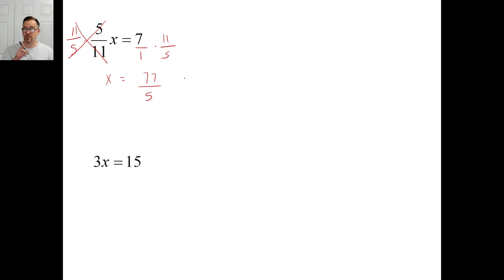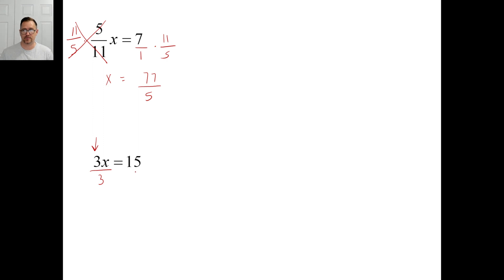Try problem B, but notice how it's different from A — the coefficient is 3, an integer, not a fraction. You could treat it as 3 over 1 and multiply by 1 over 3, or since it's an integer, it's probably easier to just divide by 3. 3 divided by 3 is 1 — that's how many x's you want. Do the same thing to the right side: x equals 15 divided by 3, which is 5.